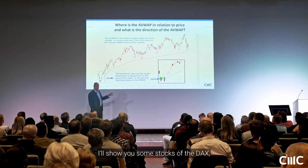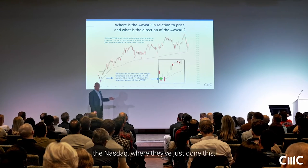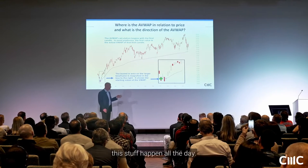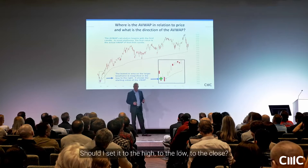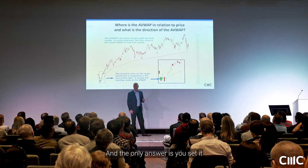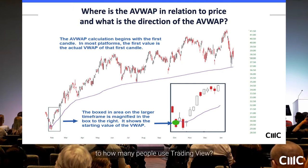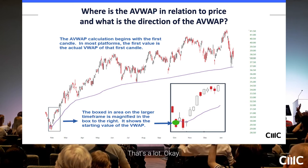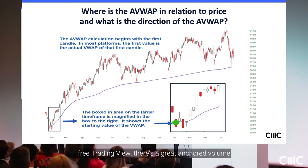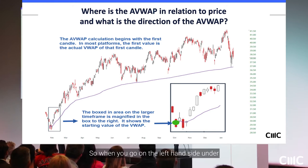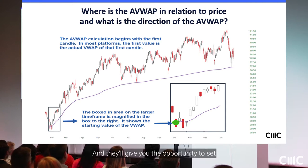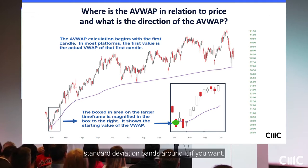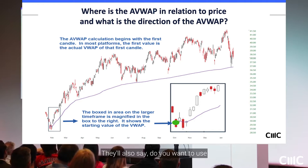I can show you this on the DAX and NASDAQ where they've done this — you see this stuff happen all day. People always ask: where do I set the anchor? Should I set it to the high, the low, or the close? TradingView — even the free version — has a great anchored VWAP. On the left side under tools, open the dropdown and at the bottom is the anchored VWAP. It's a point-and-click anchor with optional standard deviation bands.